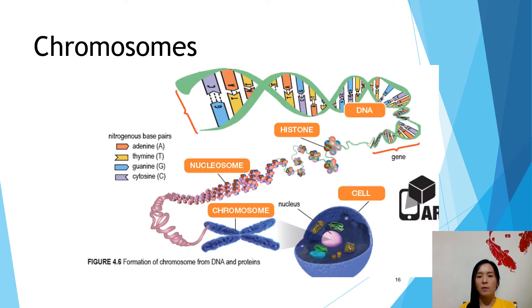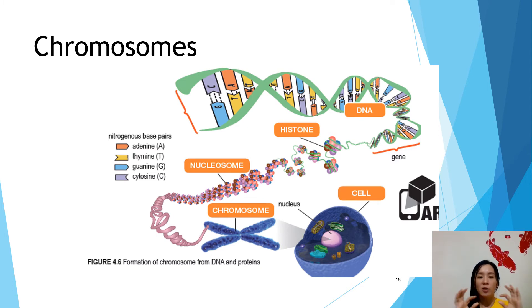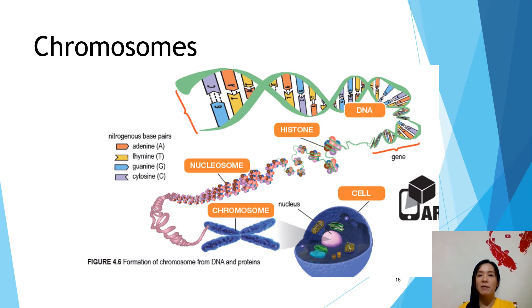Now we look at chromosomes. We have learned about chromosomes in our previous chapter on nucleic acids — how the chromosome is formed. It is formed from a polynucleotide chain where DNA is wrapped together with the protein called histone to form the nucleosome. Nucleosomes continue to coil to form the chromosome.